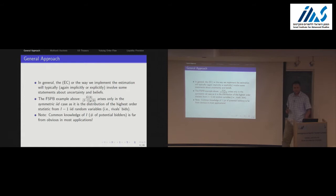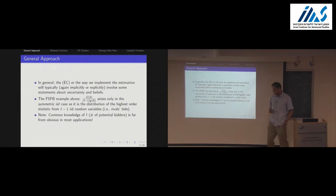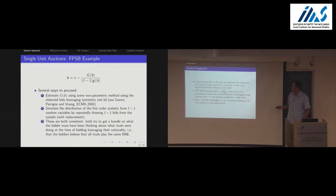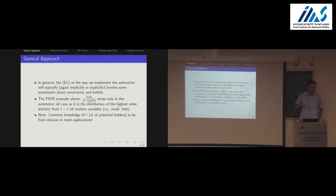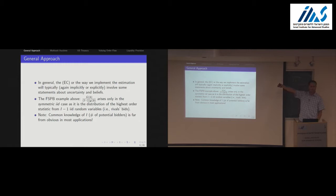Question from audience: Is it possible in principle using data to distinguish between the valuation an individual bidder has for a good and what he believes about other bidders' valuations? It all depends on the data. There is a fairly exhaustive survey by Athey and Haile which tells you what you can identify in an auction environment. In particular, if bidders have asymmetrically distributed values, there's a particular type of data you'd need to distinguish that — for example, seeing bids with identities makes it fairly easy to test whether distributions are asymmetric.